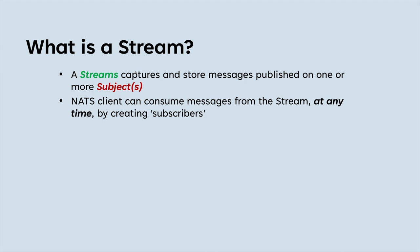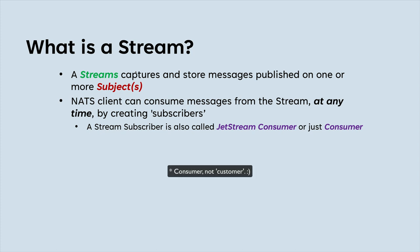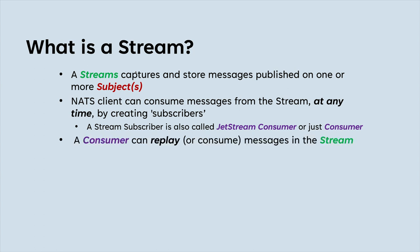NATS persists the messages, and later on clients can choose whether to consume messages from the subject as before — relying on being online — or they can go to the stream and get messages that were published before, as well as live messages. A client subscribed to a stream can be called a JetStream consumer. It's just a subscriber that happens to be subscribing to a stream instead of a subject, and it can replay or consume messages from the entire stream, choosing how it wants those messages delivered.